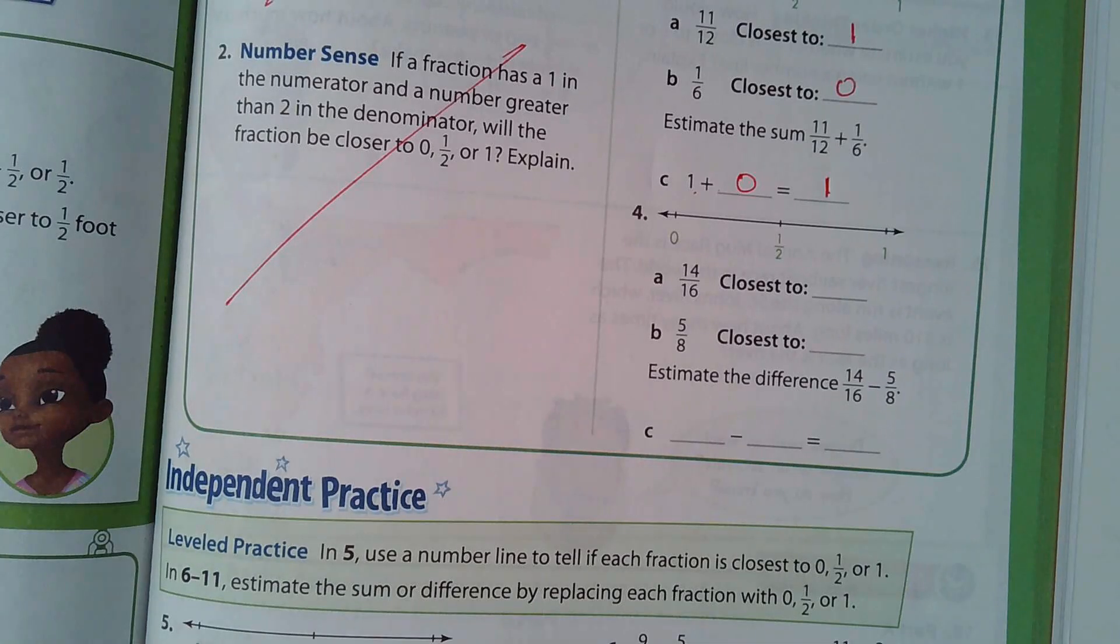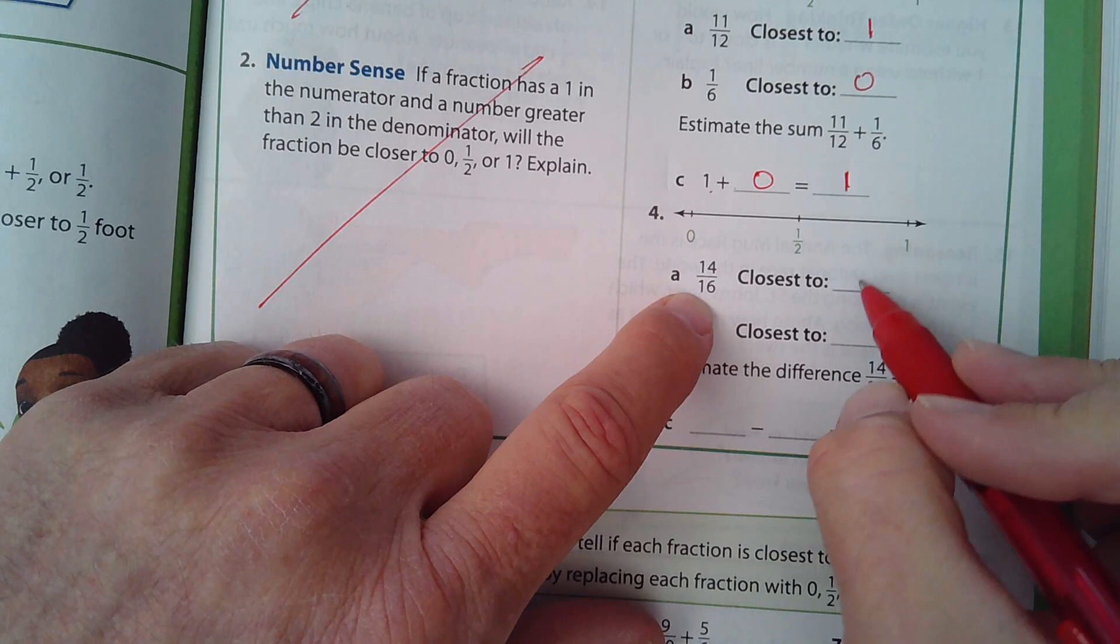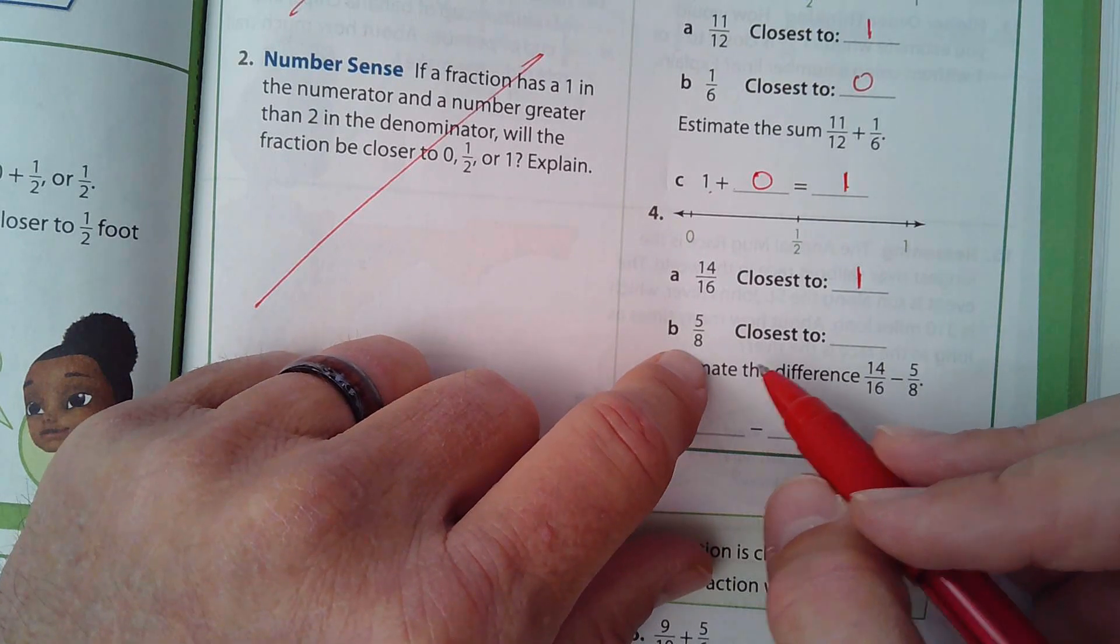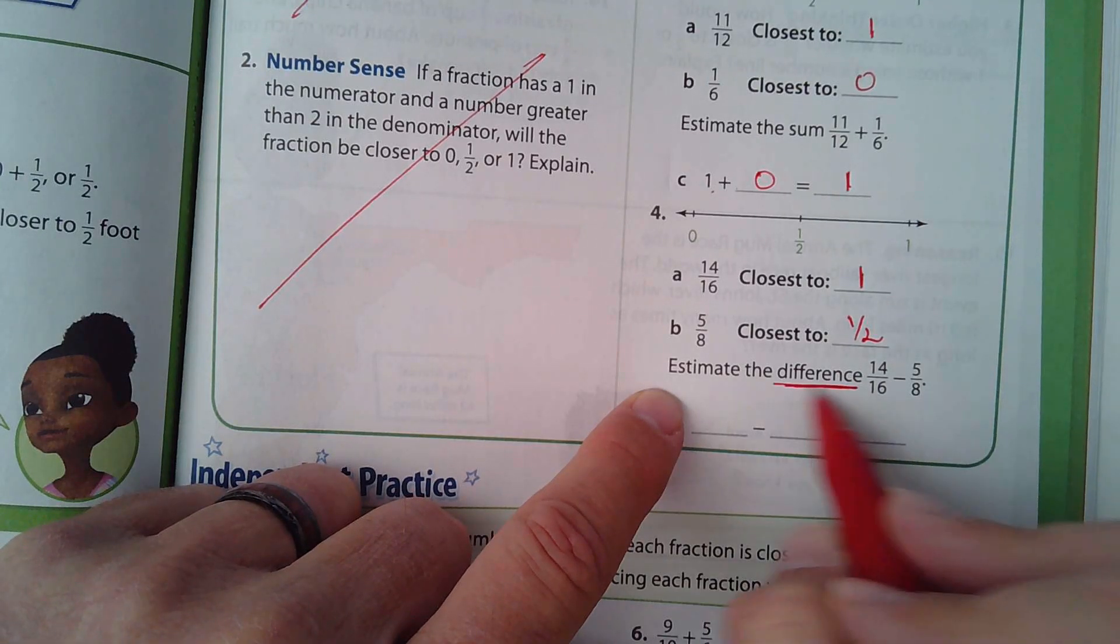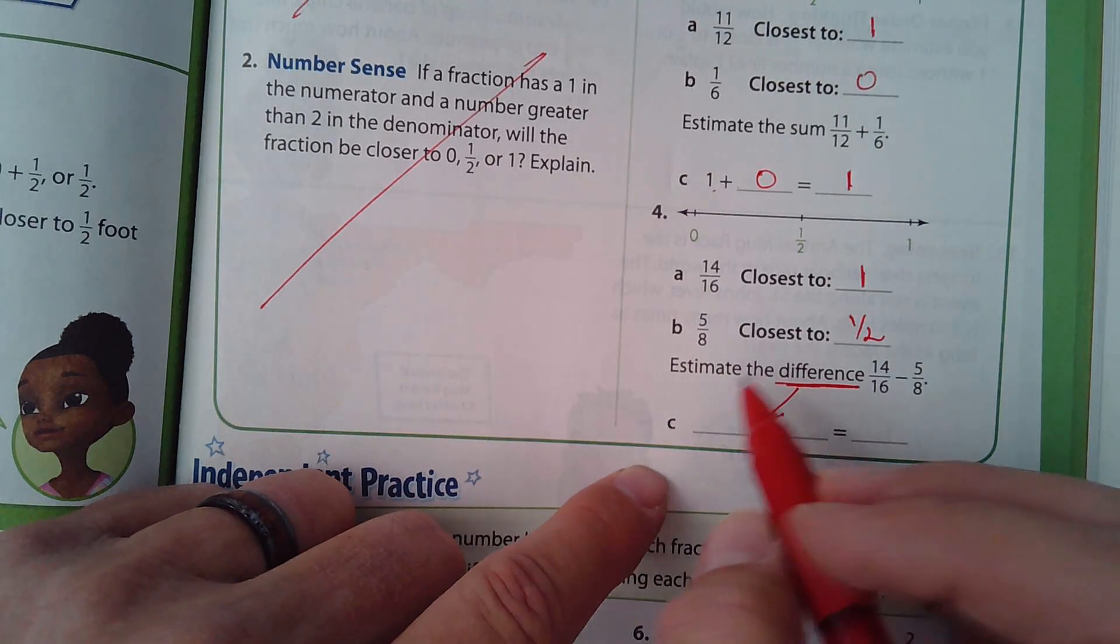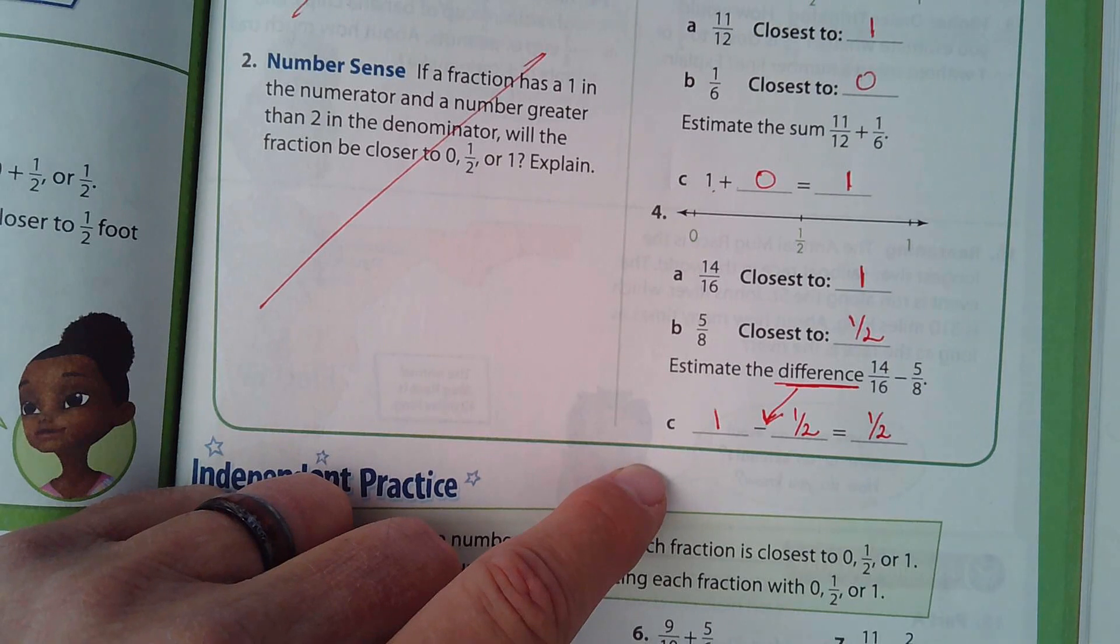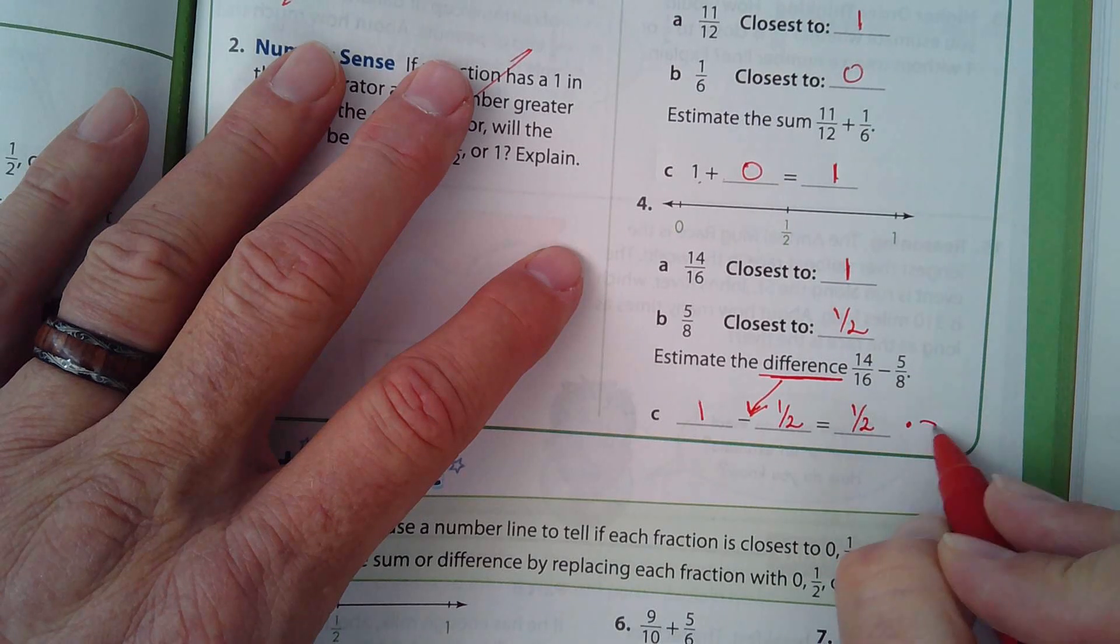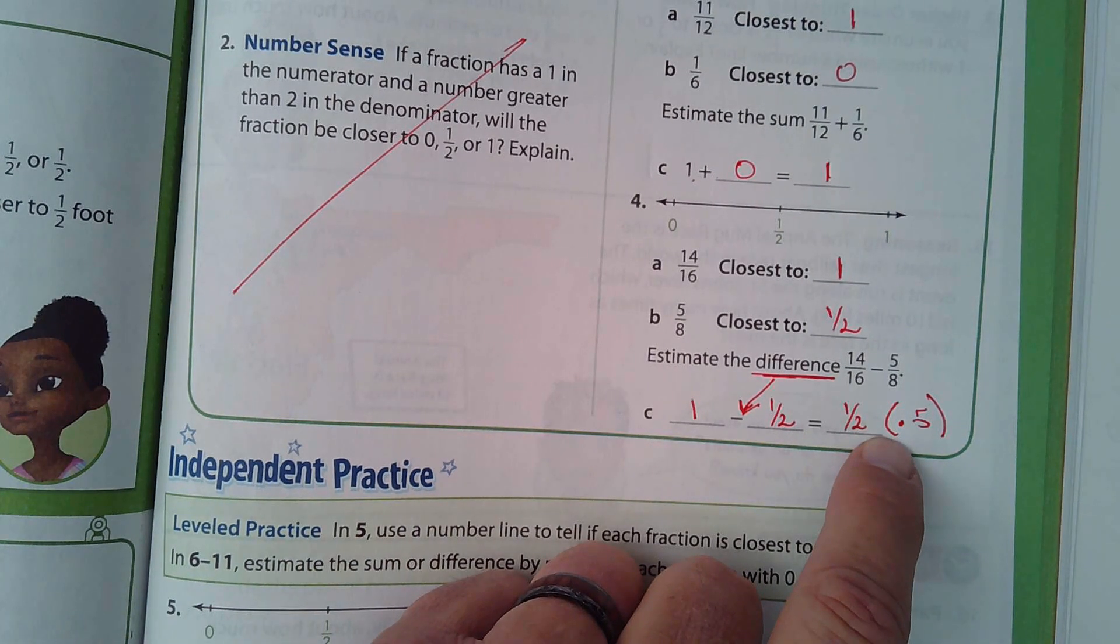And the next one, fourteen out of sixteen, that's pretty close to one. And five out of eight, that's pretty close to one-half. Now notice in this one, they're asking about difference. And what do we have here when we're talking about difference? We have subtraction. And so, one subtracting one-half is one-half. Now let me ask you, because we were talking about decimals earlier and equivalent fractions, if somebody had written .5 as their answer, would that still be correct? Yes, it would. One-half is equivalent to .5.